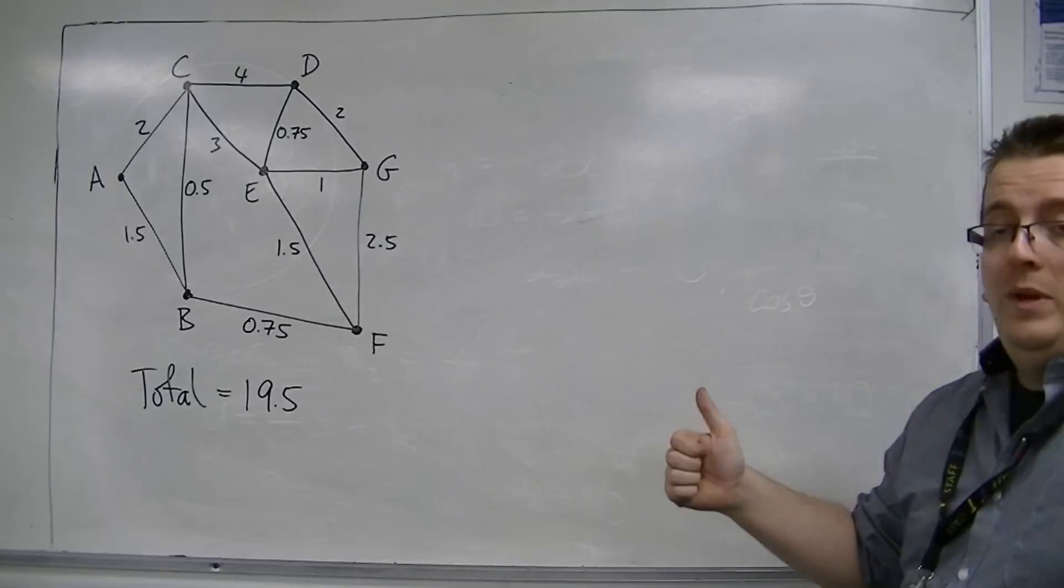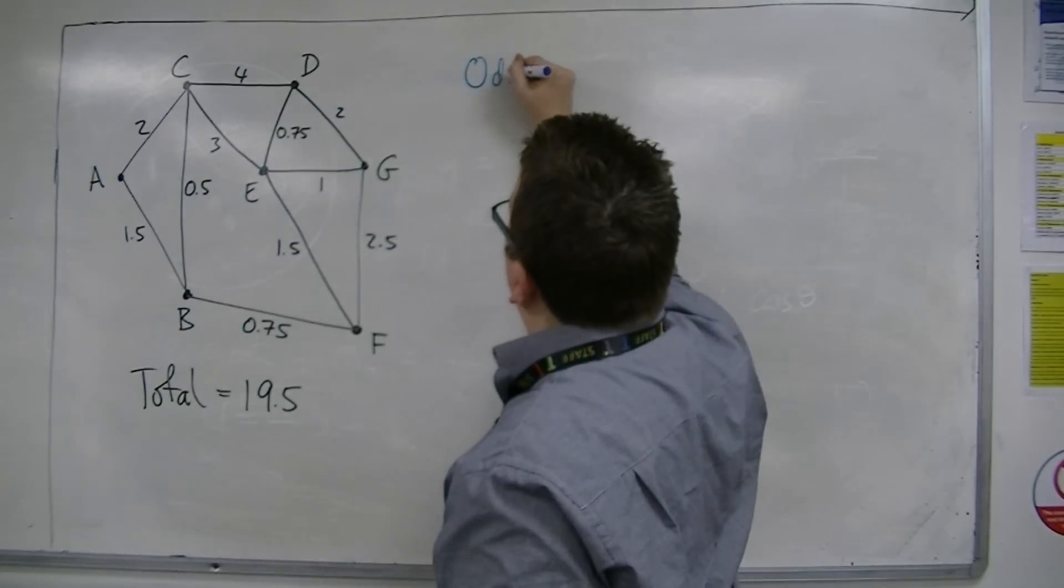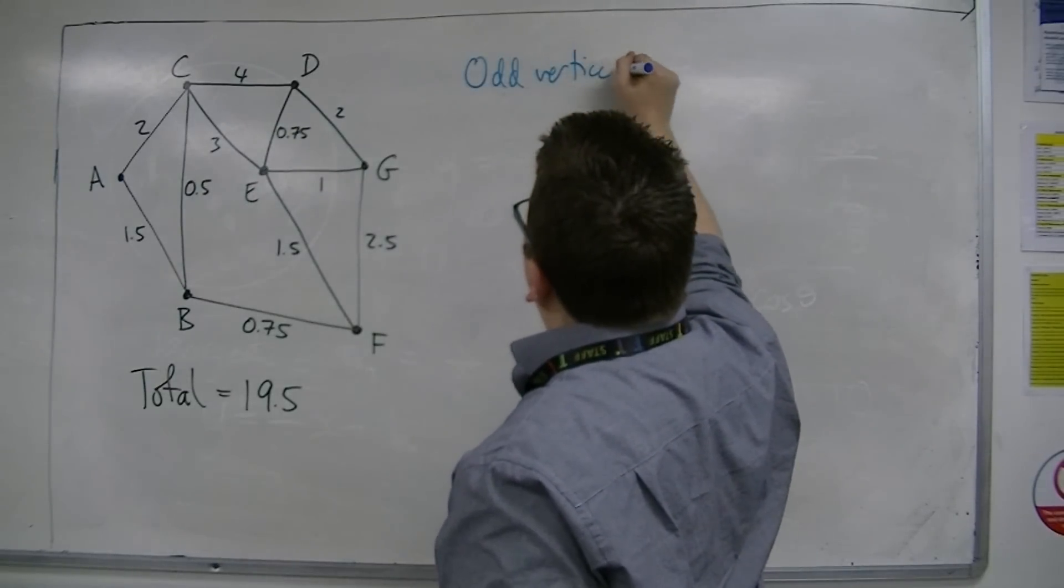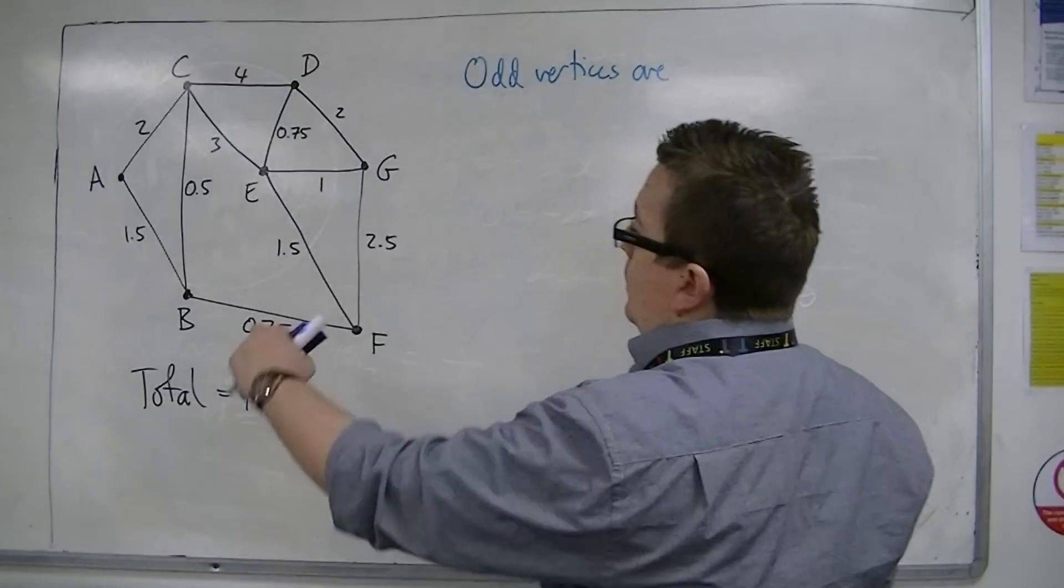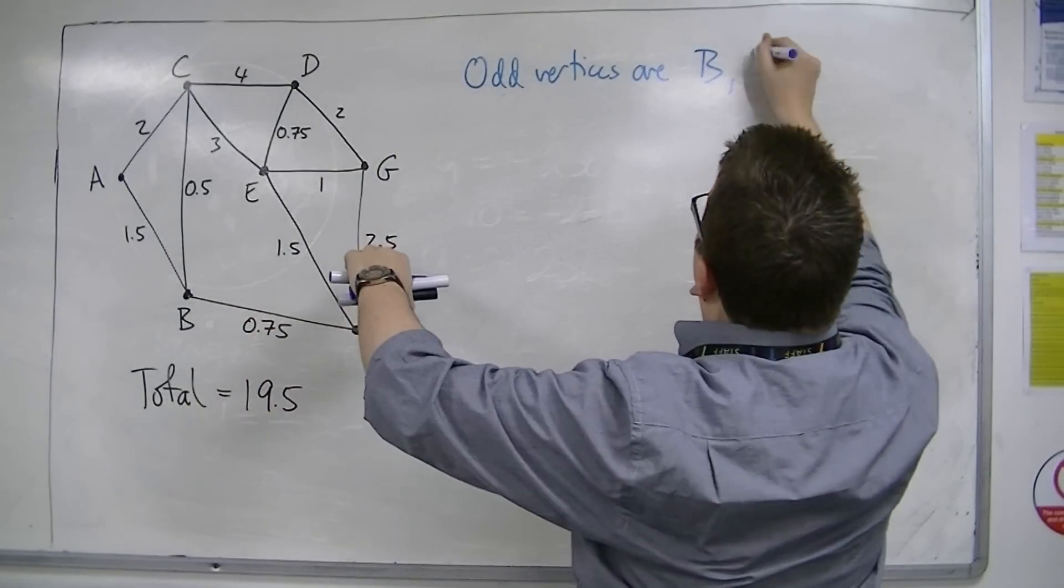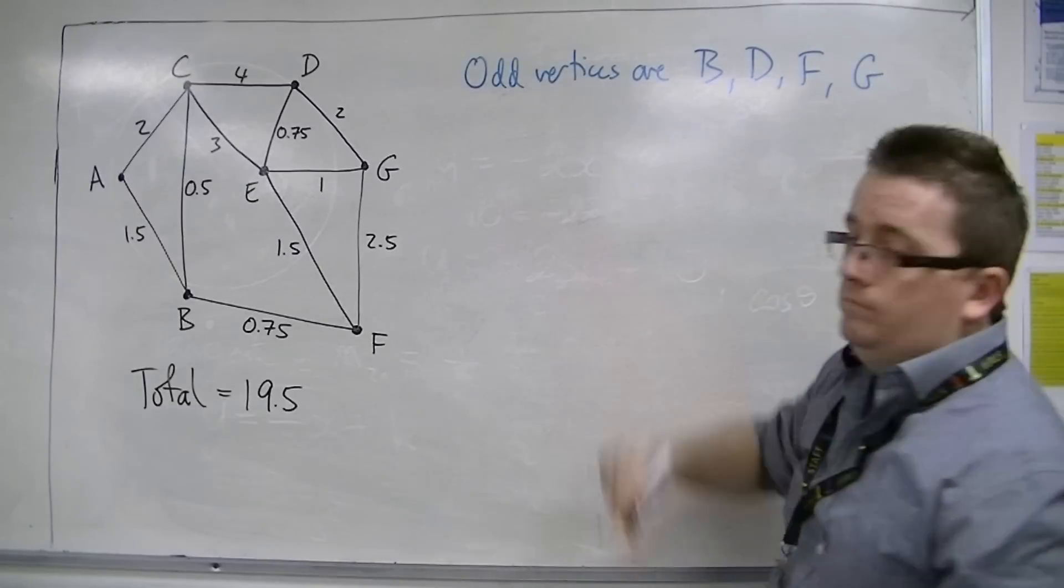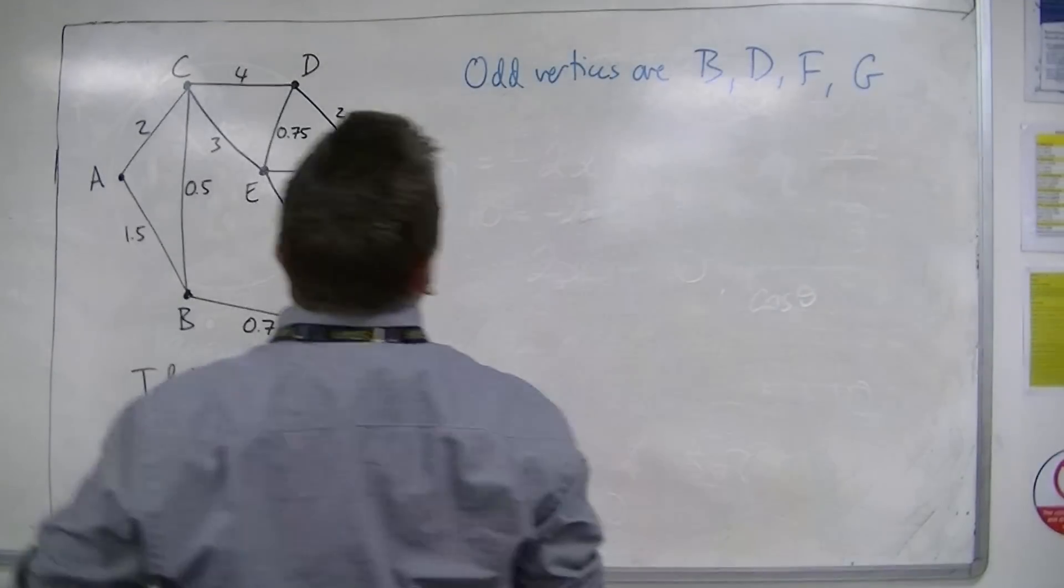The first thing that we need to do is to identify the odd vertices. So we're going to write down odd vertices are, well, we've got B, we've got D, we've got F, and we've got G. So there are four odd vertices in this case.